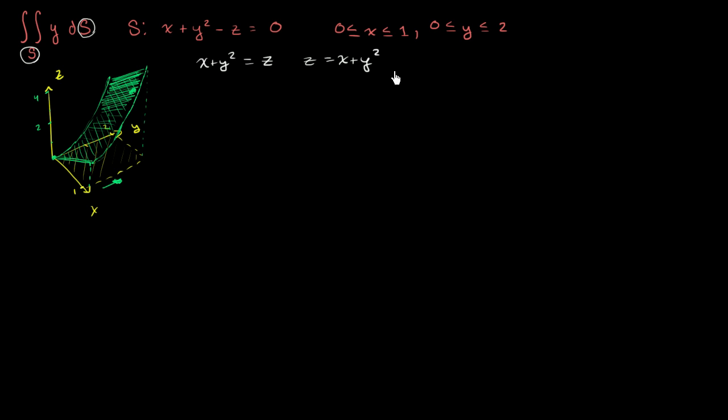So let me just write: x equals—and in the spirit of using different notation, instead of using s and t, I'll use u and v. x equals u, y equals v, and then z is going to equal u plus v squared.